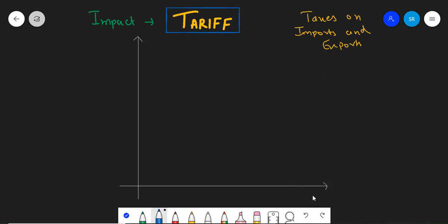On the x-axis, I have plotted quantities and on the y-axis, I have plotted prices. This is a downward sloping demand curve which is named as D-D1 and an upward sloping supply curve which is S-S1. Both the demand curve and the supply curve are the domestic demand and supply curves.